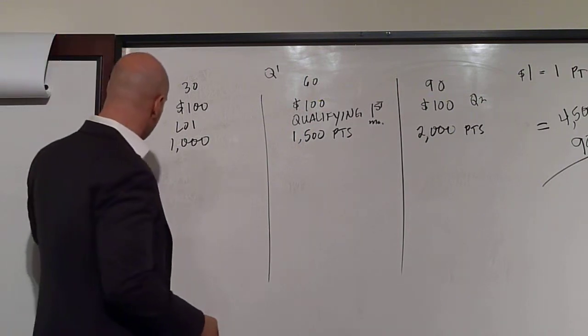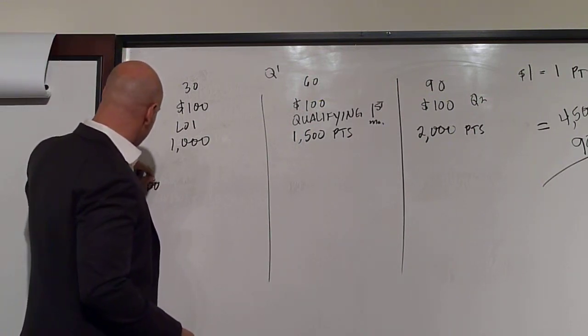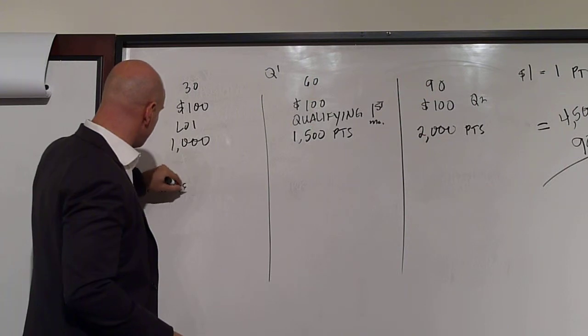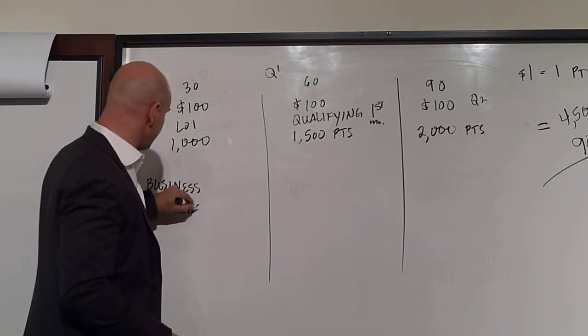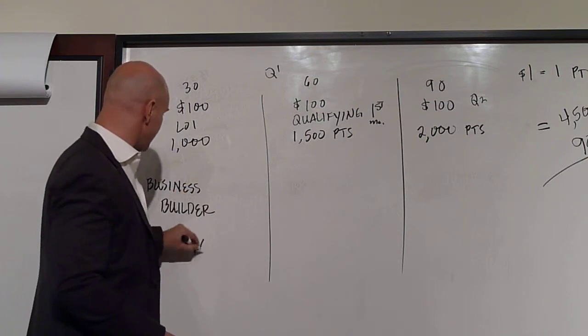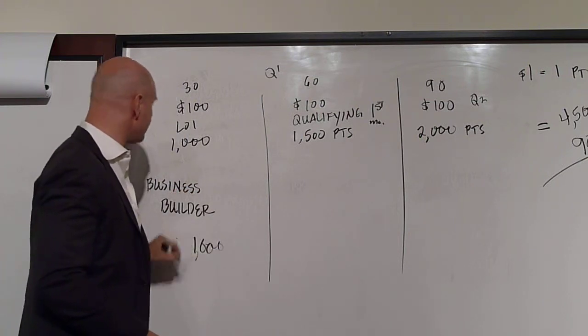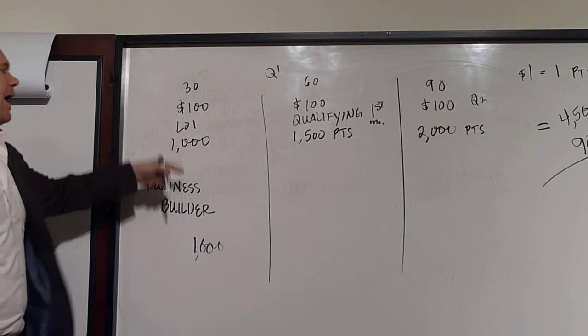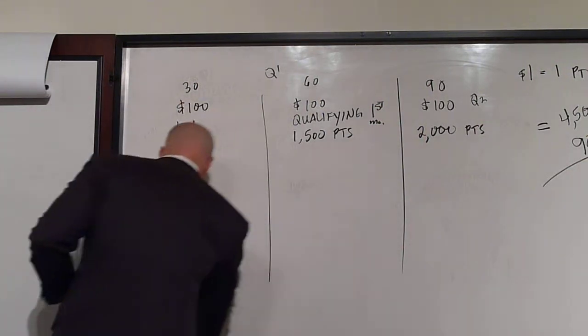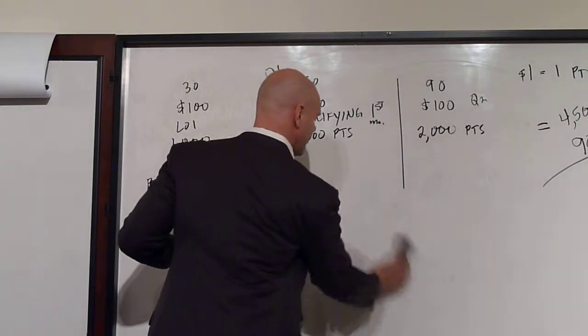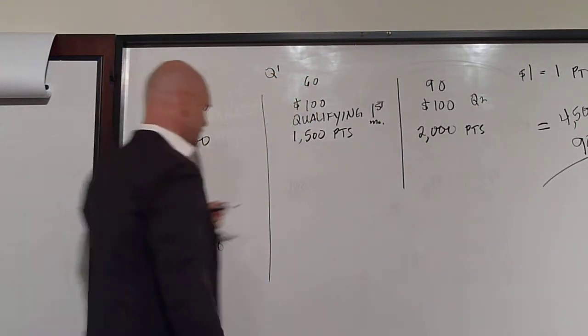Fair enough. You can actually buy a business builder package. The business builder package will give you that thousand point requirement to place your LOI. Then the smarter thing to do, and what we teach, is here you are.